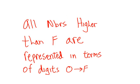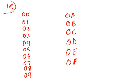All numbers higher than F are represented in terms of digits 0 through F. Here we see 00, 01, 02, 03, yadda yadda yadda, all the way down to 0F.